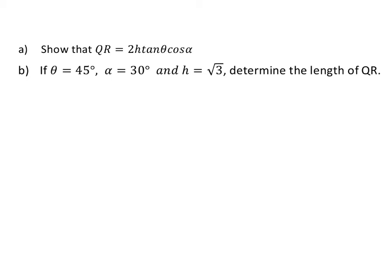After we've now proven A, we can now go to question B, which is if theta is 45 degrees alpha 30 and H square root 3 determine the length of QR. Now, we've already shown in question A that QR is the same as 2H times tan theta cos alpha. So, all that's left for us to do is to substitute and use a calculator.